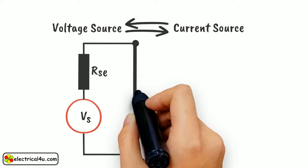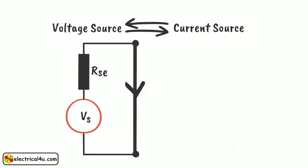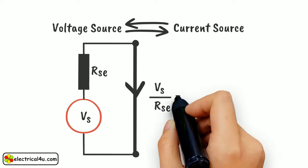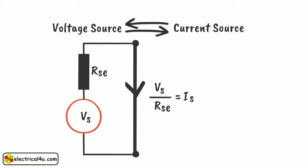Now the terminals of the source are short circuited. Hence, current supplied by the source would be Vs by Rse and let us consider it is Is.